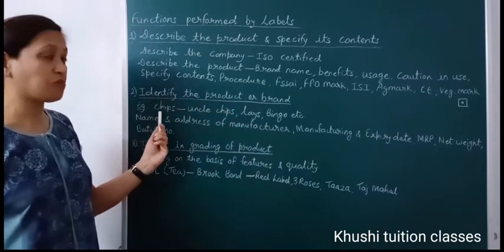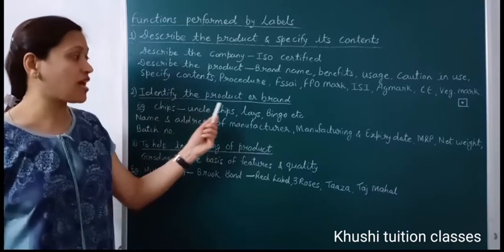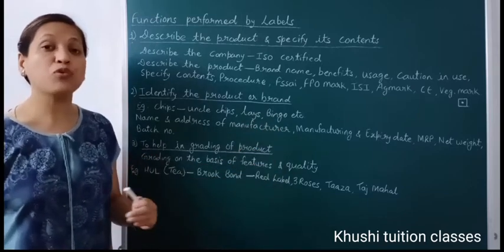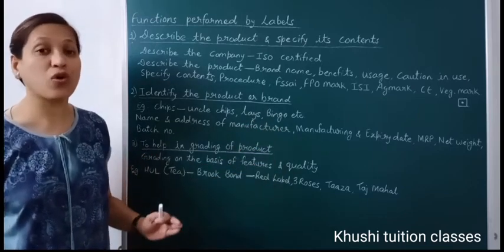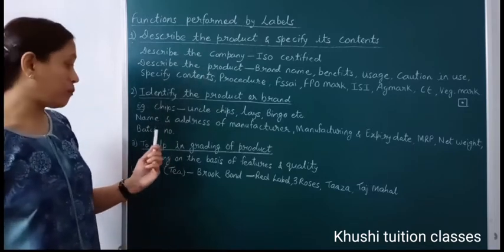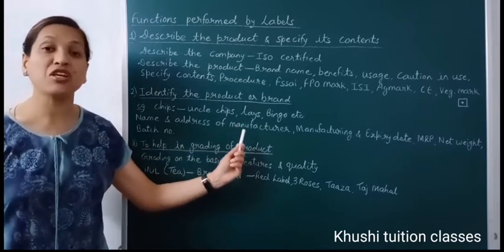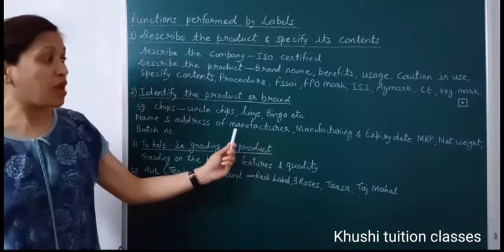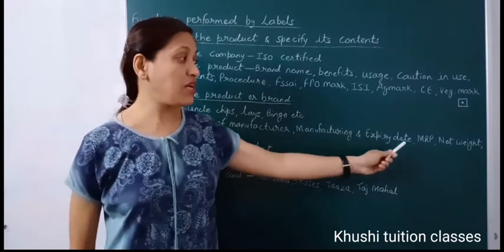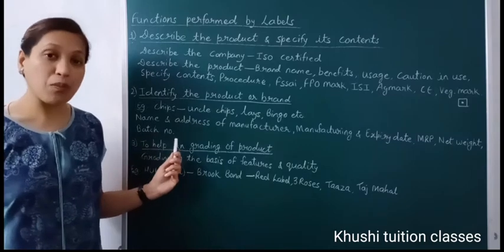The second function is to identify the product or brand — जैसे chips का product है तो इसका brand name कौन सा है: Uncle Chips, Lays, Bingo? या toothpaste purchase कर रहे हैं तो यह Colgate है, Babool है, या Patanjali की है? So the label shows brand name, name and address of manufacturer, manufacturing and expiry date, MRP, net weight of the product, and the batch number of the product.